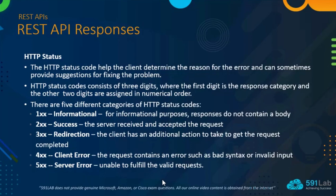We have types of HTTP status codes. The HTTP status code helps the client determine the reason for errors and can sometimes provide suggestions for fixing the problem. HTTP status codes consist of three digits, where the first digit is the response category and the other two digits are assigned in numerical order.